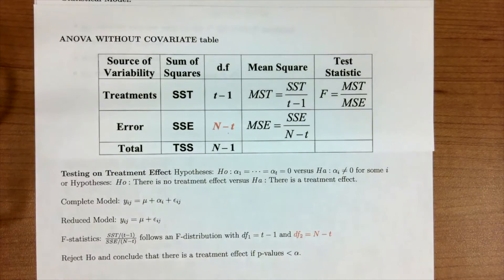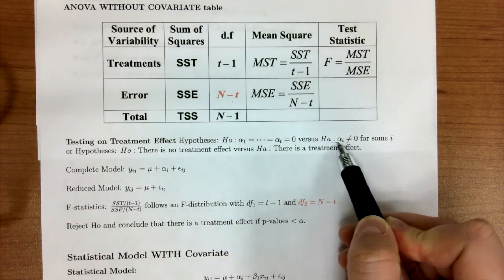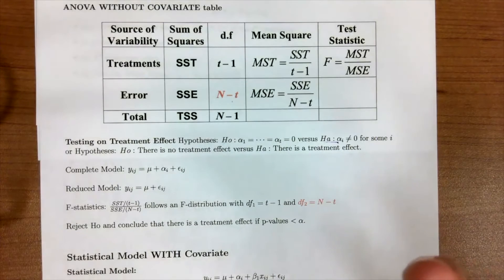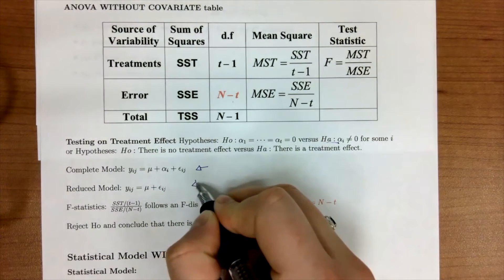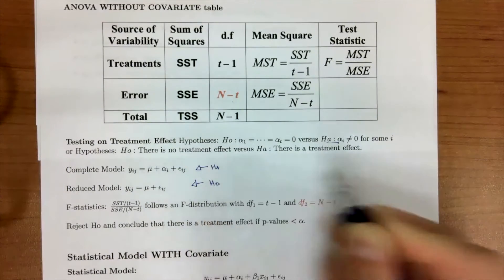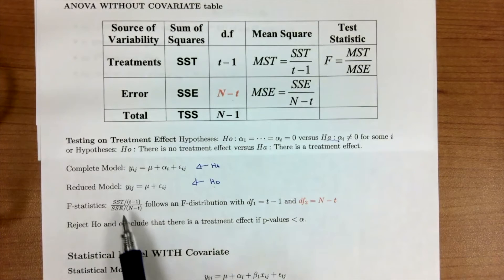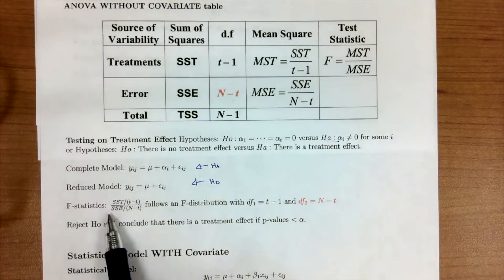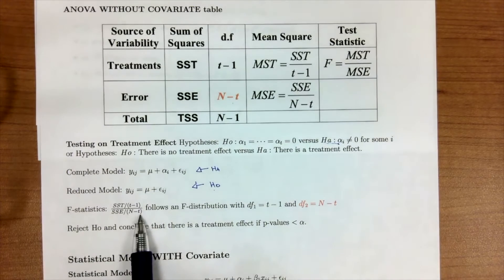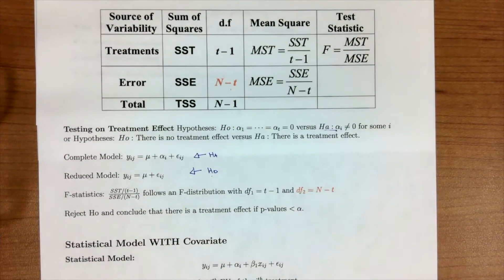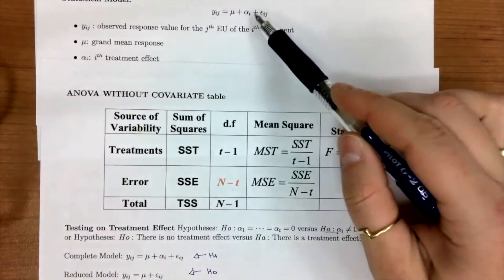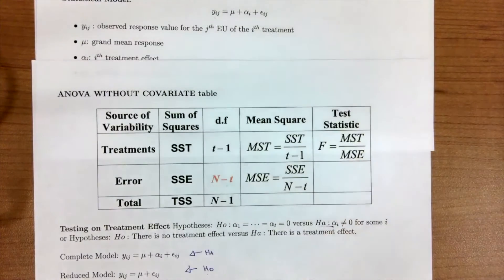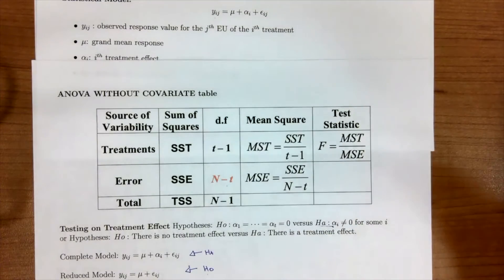When comparing null versus alternative, if we rejected the null and accepted the alternative, we were really comparing the full model versus the reduced model — the alternative being the full model and the null being the reduced model. Our F-statistic follows SST divided by its degrees of freedom, divided by sums of squares error divided by its degrees of freedom. We reject the null and conclude there is a treatment effect if the p-value is less than our significance level alpha.